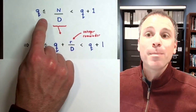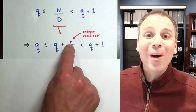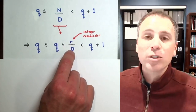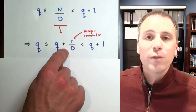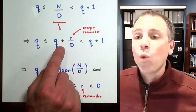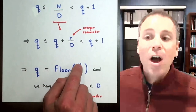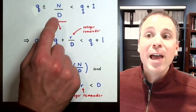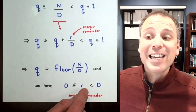We can write N divided by D as Q plus R over D, where R is the integer remainder. We claim that R is bounded above and never equal to capital D — otherwise we would increment Q. The integer quotient Q is always less than or equal to the actual value of the fraction, bounded above by Q plus one. This gives us the result that Q equals the floor function of N divided by D, and the remainder R satisfies zero less than or equal to R, strictly less than D.